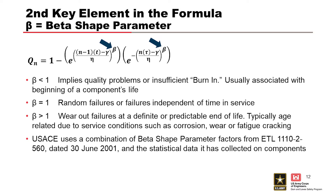A beta greater than one is wear-out failures at a definite or predictable end-of-life. Typically, age-related due to service conditions, such as corrosion, wear, fatigue, cracking. We use a combination of beta parameters from ETL 1110-2-560 and the statistical data that we've collected on components.